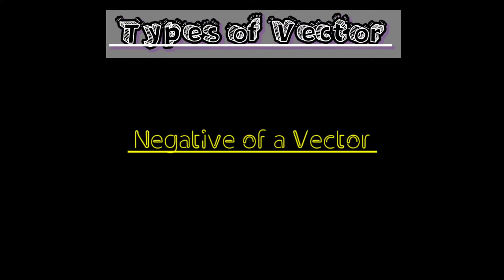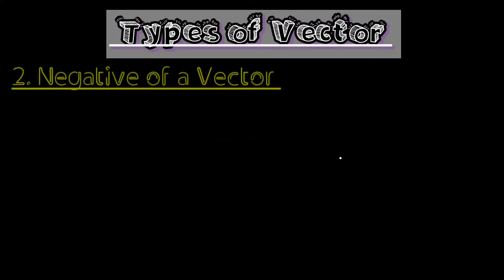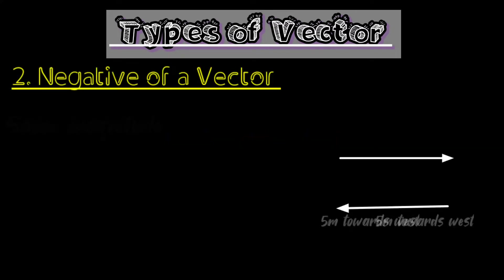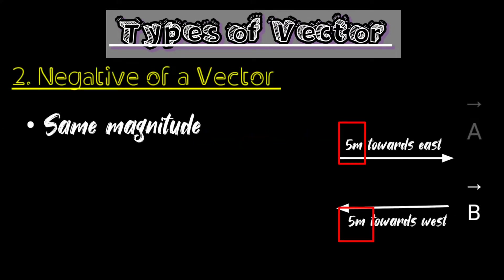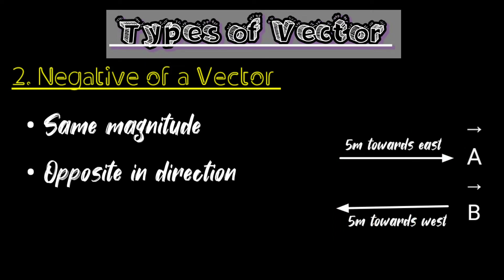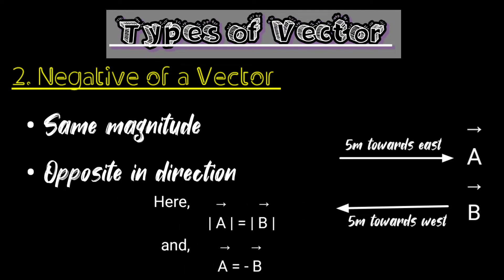Negative of a vector: vectors having the same magnitude but opposite in direction are called the negative of a vector.